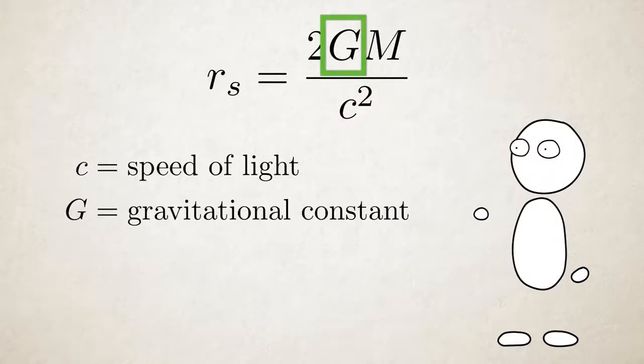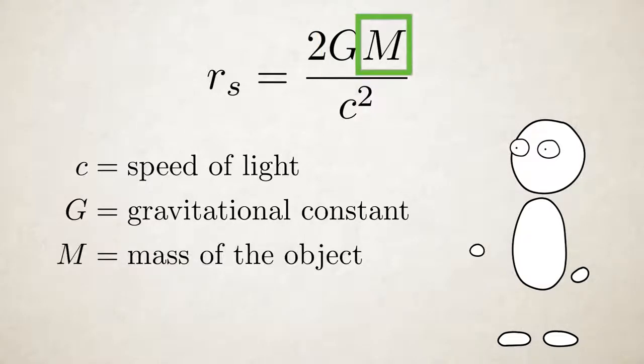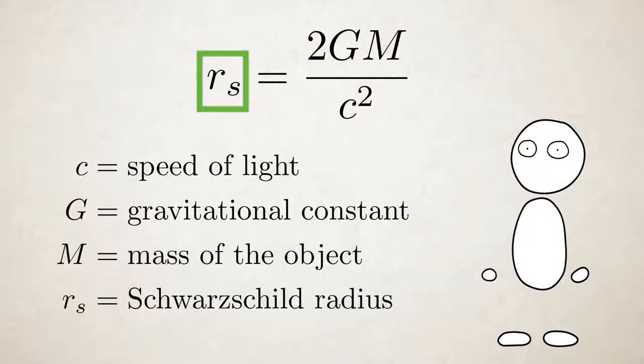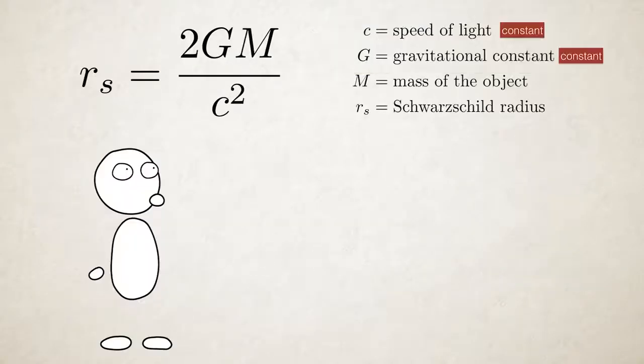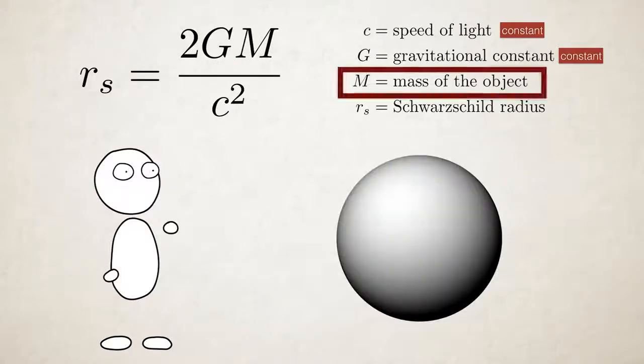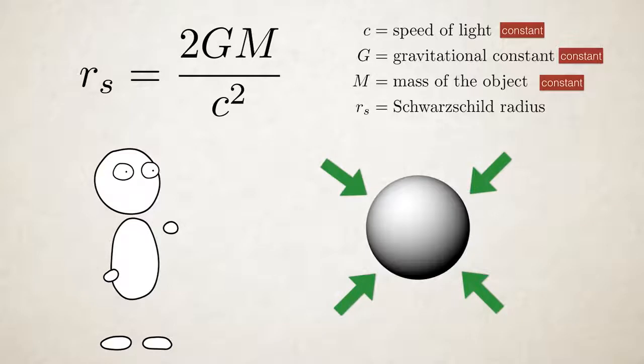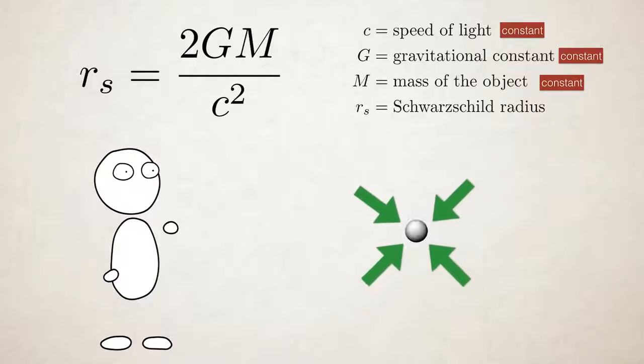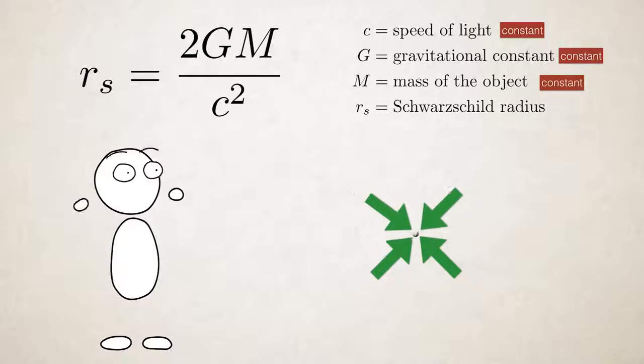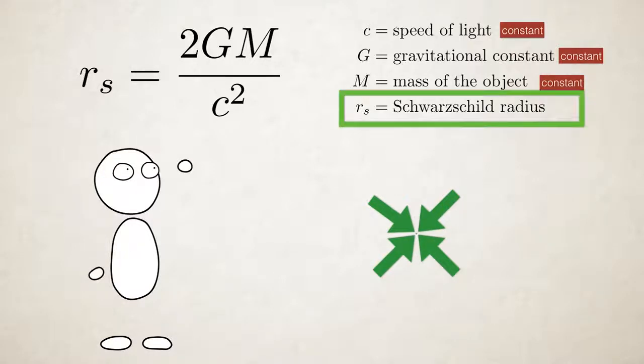C is the speed of light. G is the gravitational constant. M is the mass of the object and RS is the Schwarzschild radius. C and G are constants. Say you have a ball of mass M. If you squeeze it the mass stays the same but its volume gets smaller. If you keep squeezing the ball it will become tiny but stay just as massive as before.